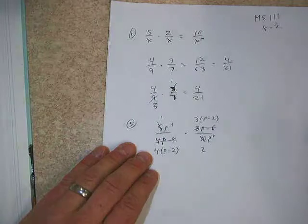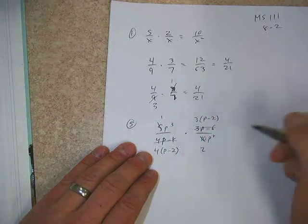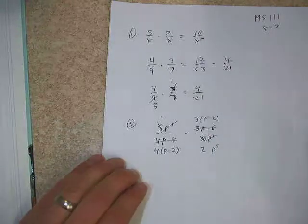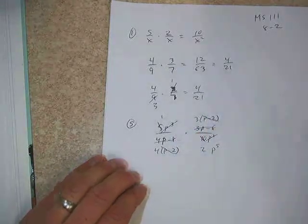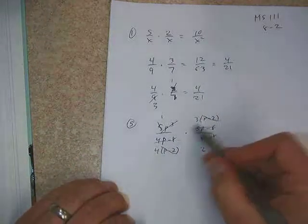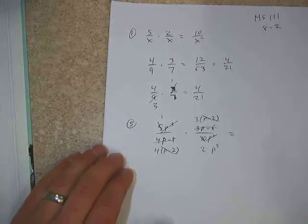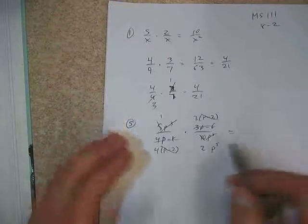So we can see number-wise that the 5 and the 10 will cancel, make that a 2 and make that a 1. We've got a p to the 3 and a p to the 8th. We know that p to the 3 is going to cancel out and make that p to the 5th. We have a p minus 2 and a p minus 2. And then we have a 3 and a 4, and those of course don't cancel. So we're done with the reducing part.